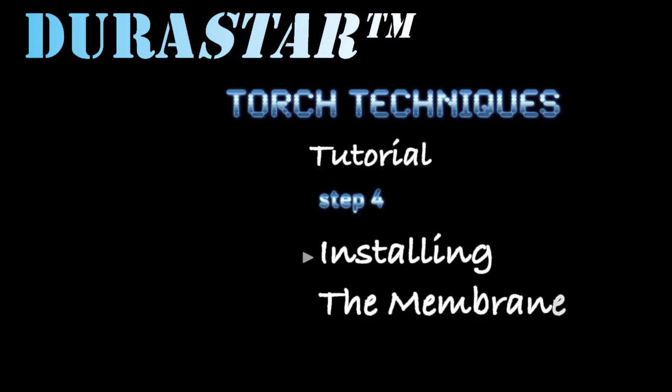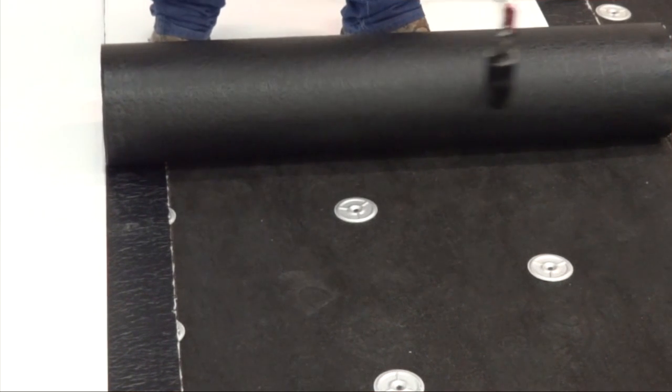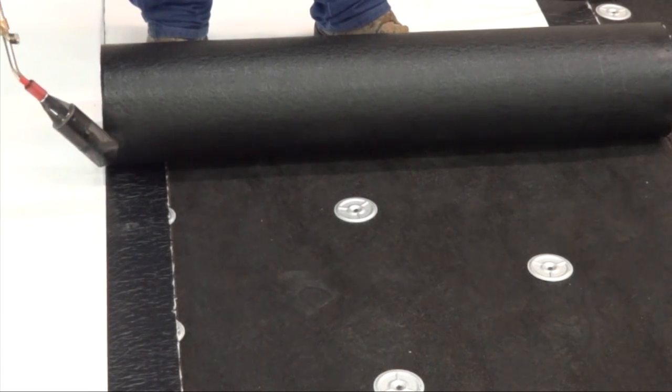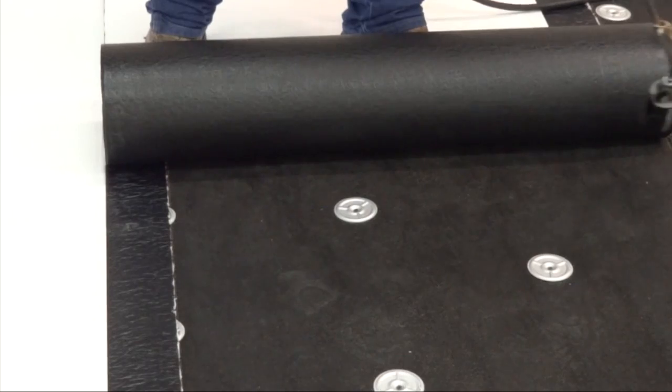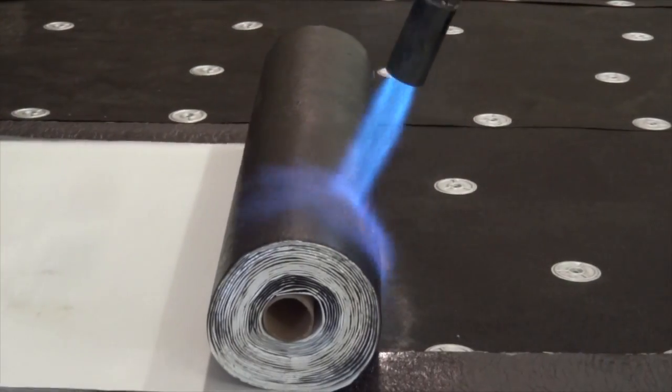Step 4: Installing the Membrane. When a torch welding technique is used, the propane torch flame should be applied uniformly across the exposed underside surface of the membrane and lap areas until the compound reaches the proper application temperature. The best visual indicator for proper temperature is when the compound develops a slight sheen.